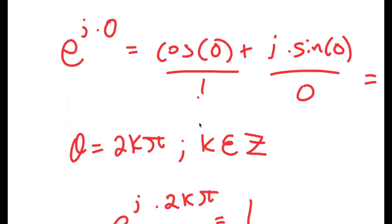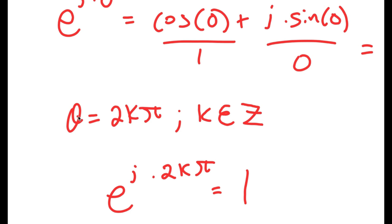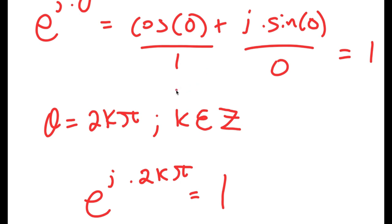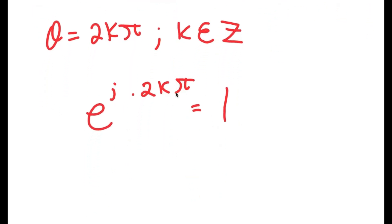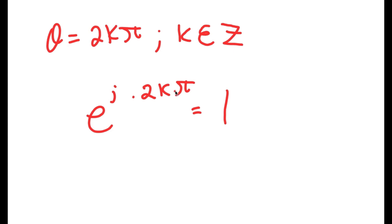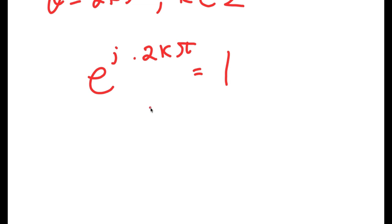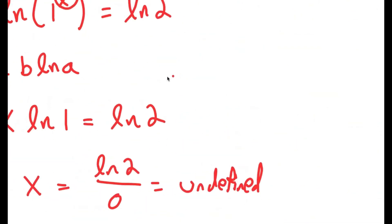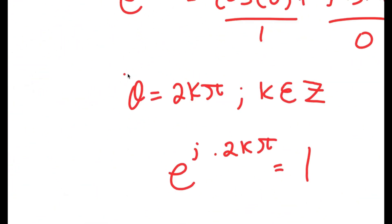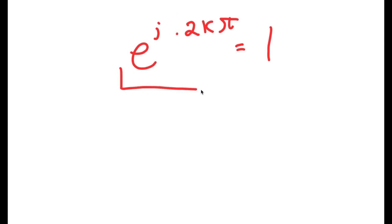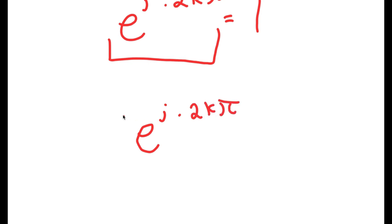So I get e to the power of i times 2k pi is equal to 1, because all we did was substitute theta with 2k pi into the same formula. Now, because this is equal to 1, we can remember our first equation which started with 1 to the power of x equals 2, and we can substitute this in for 1. So I get e to the power of i times 2k pi, to the power of x, is equal to 2.